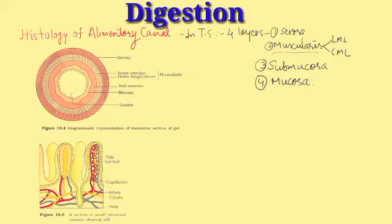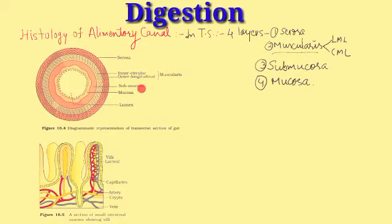The third layer from outside to inside is the submucosa. The submucosa layer is made up of areolar connective tissue, lymph vessels, blood vessels, and nerve fibers. Especially in the duodenum, the submucosa contains special type of glands called Brunner's glands.